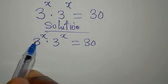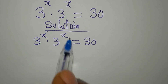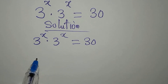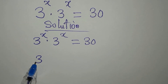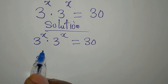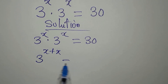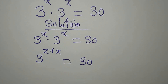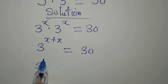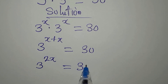For us to solve this, we are going to apply one of the laws of indices here. If we have the same base, we can pick one of them, and if it is multiplication, we add the powers. So 3 to the power of 2x is equal to 30.